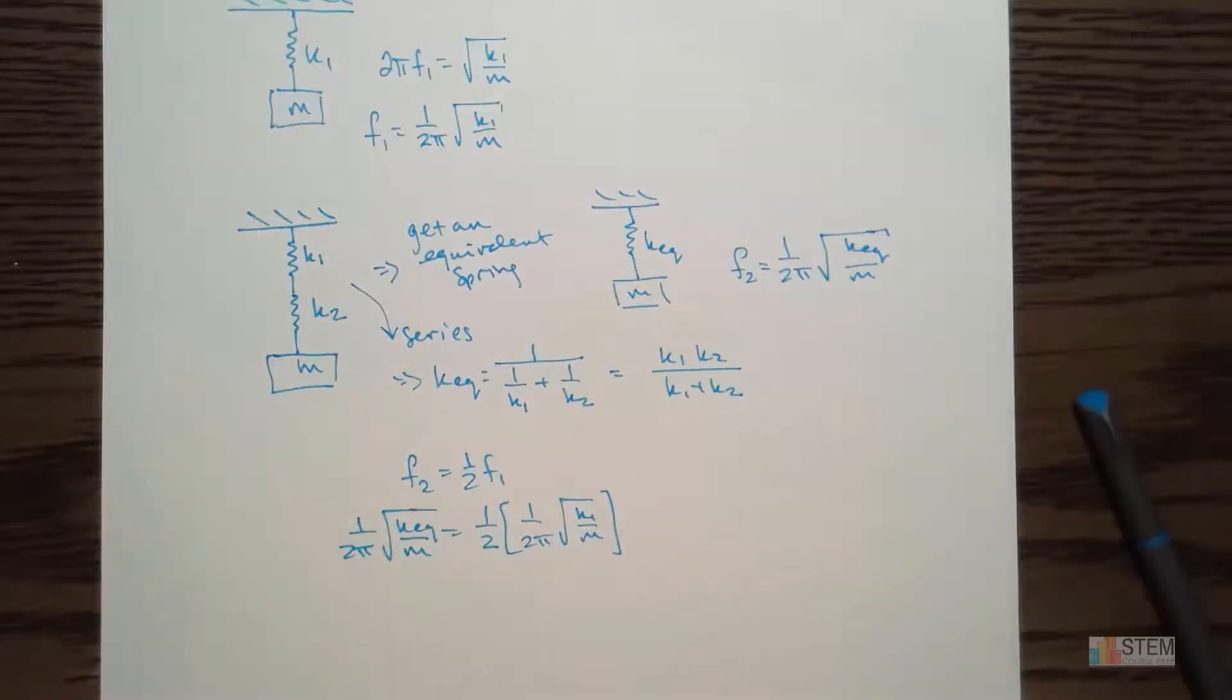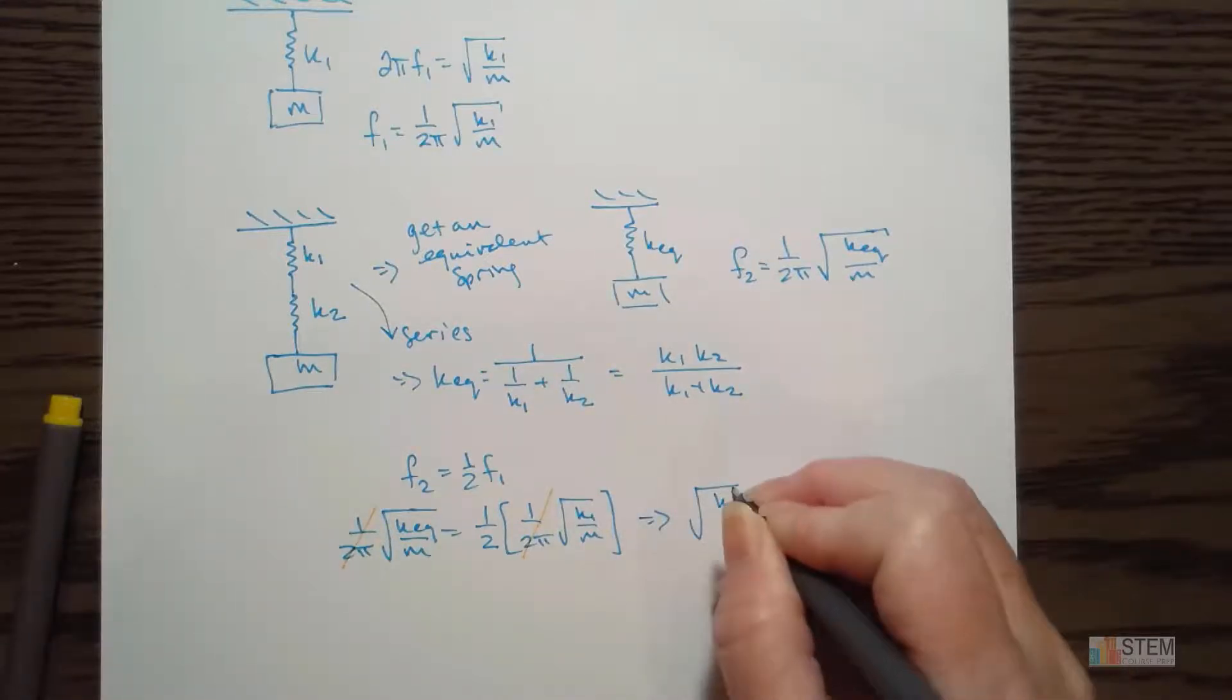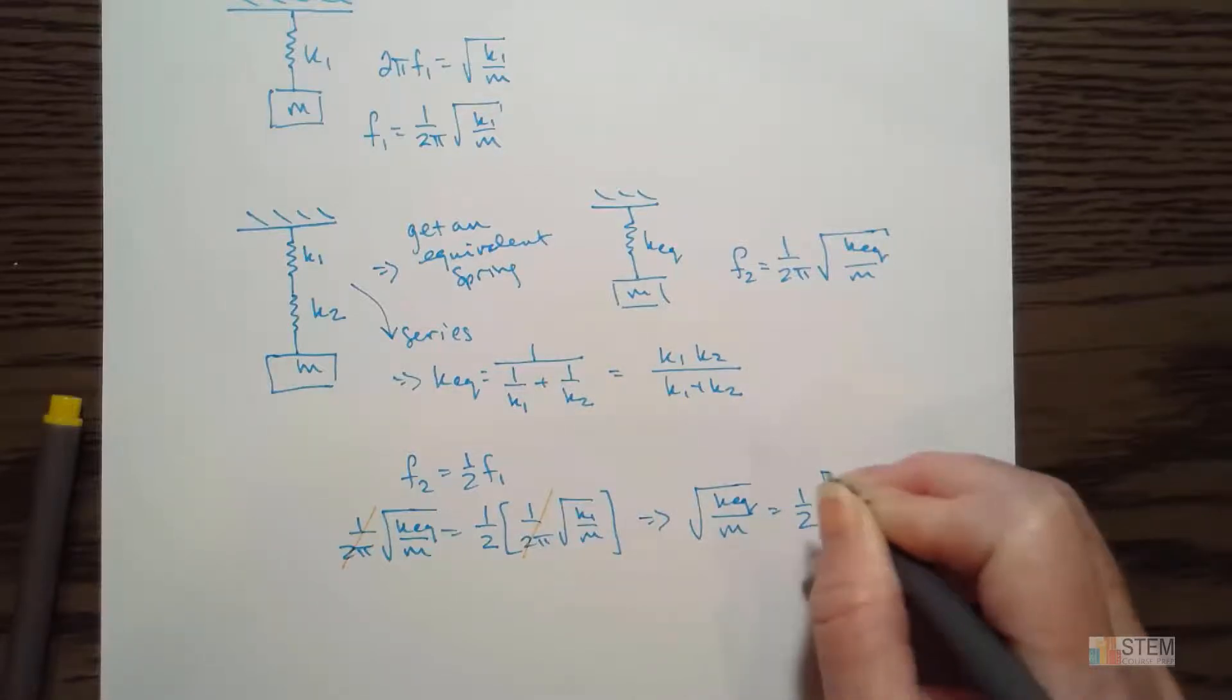So we're going to have 1 over 2 pi times that square root of k equivalent over m, and that's going to equal 1 half times f1. So that's 1 over 2 pi times the square root of k1 over m. Now let's see if anything cancels so we can simplify this a little bit. We've got 1 over 2 pi here on both of these. So that goes away. And then we're left with the square root of k equivalent over m equals 1 half times the square root of k1 over m.